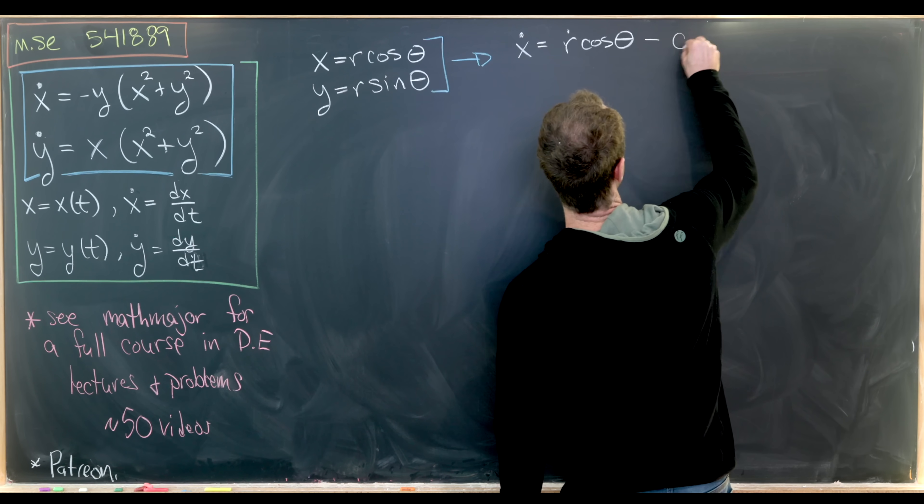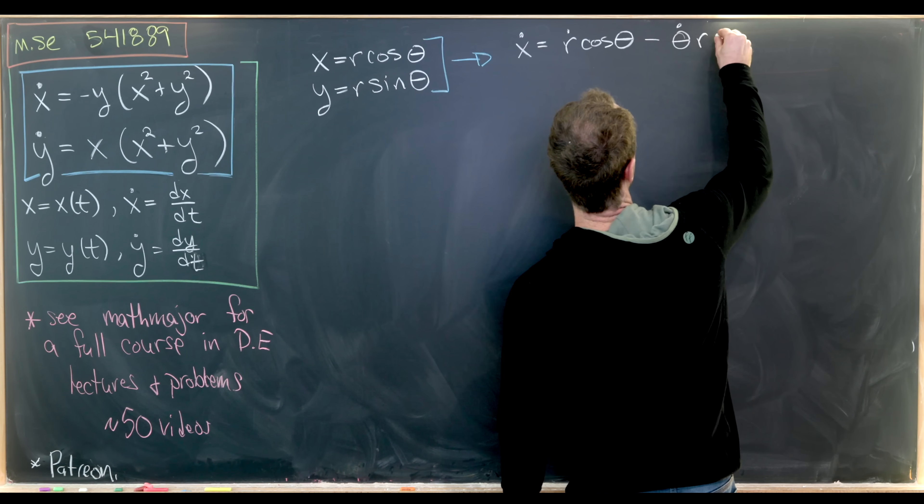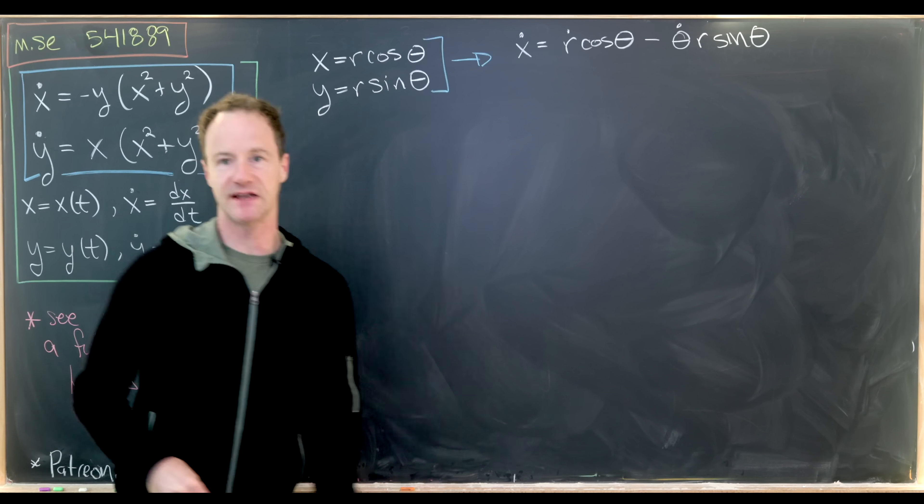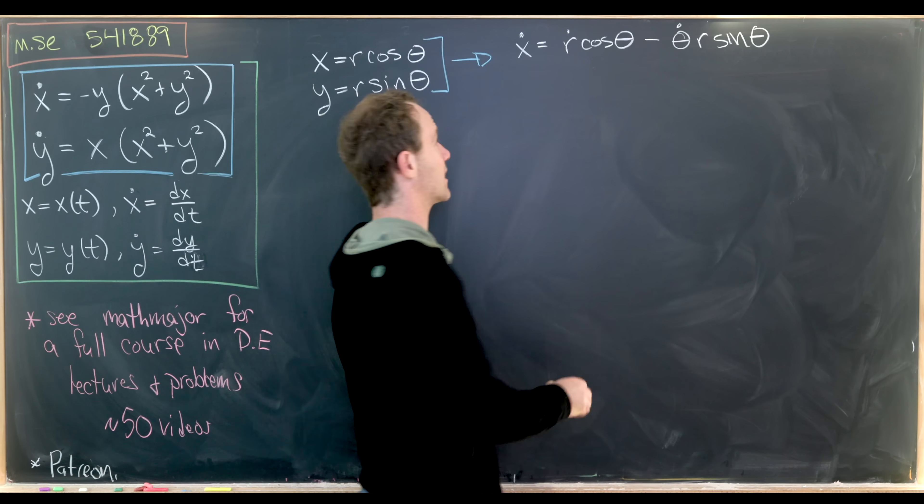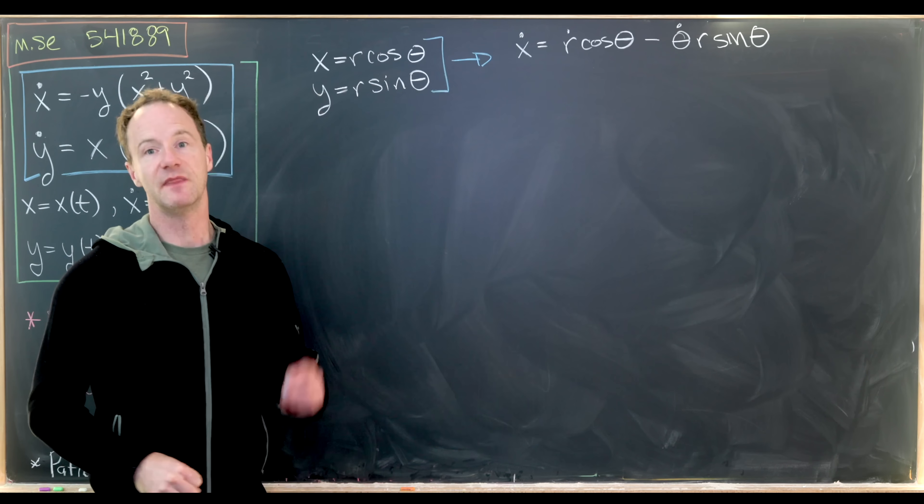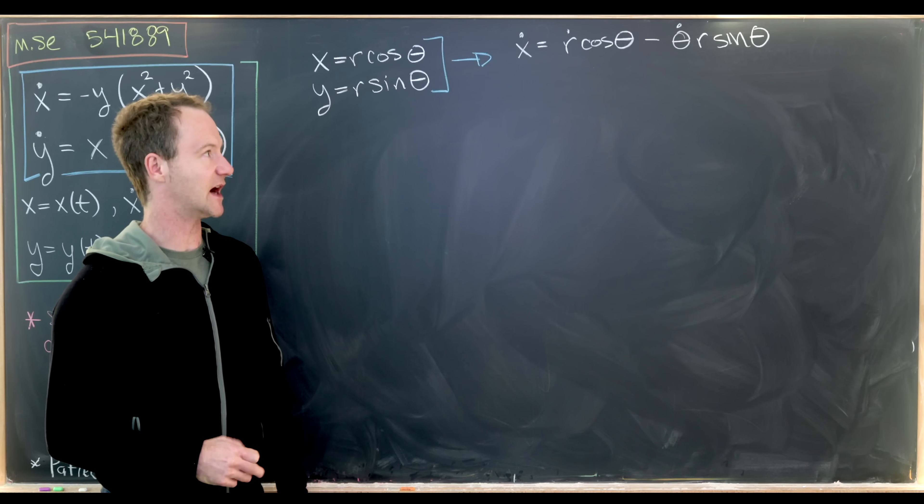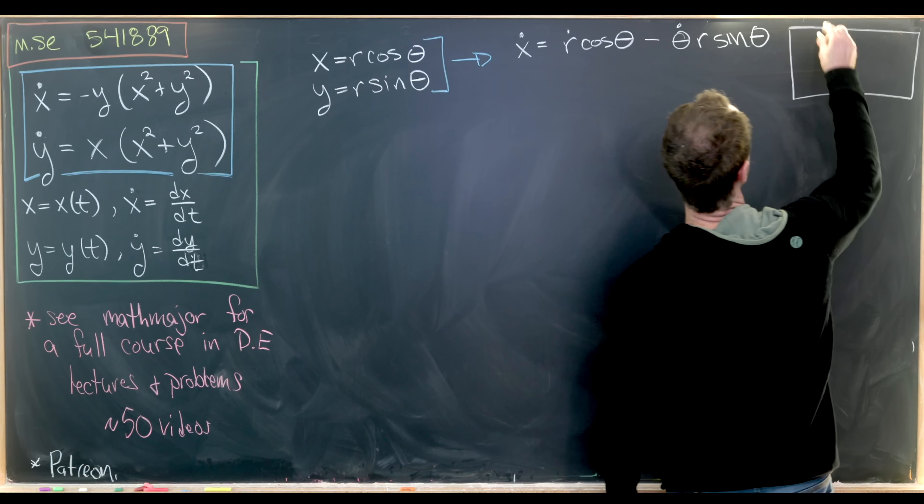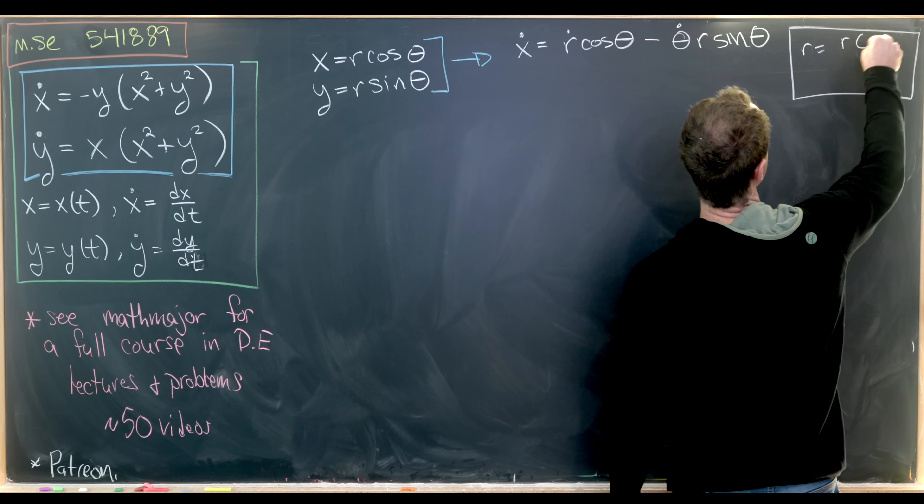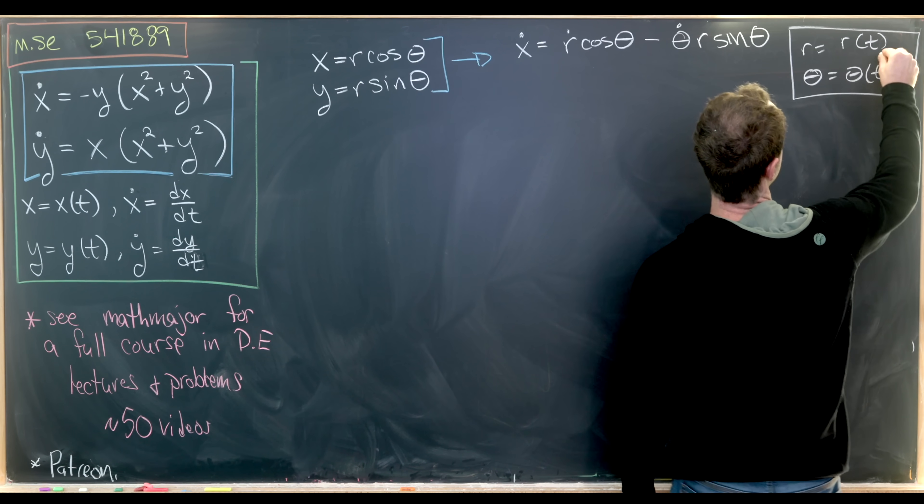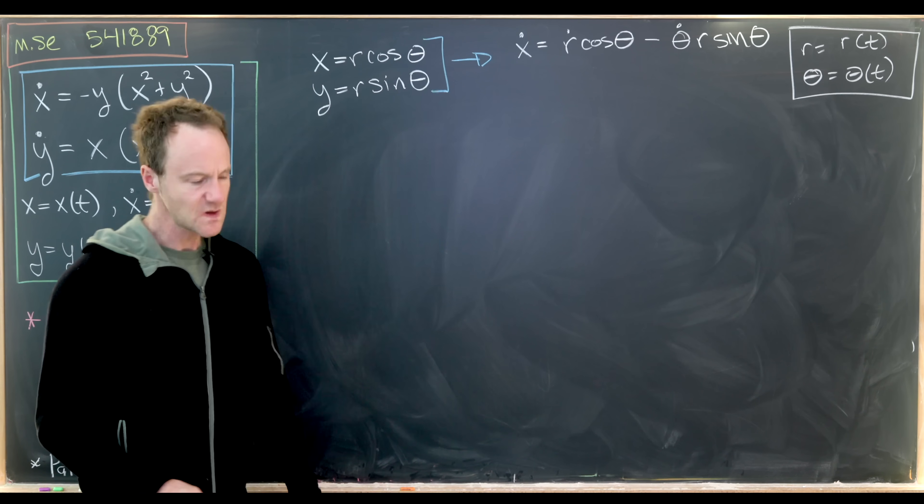and then we'll have minus θ dot times r times sine θ. So notice I had to use the chain rule there. I took the derivative of cosine and it became negative sine. Then I had to take the derivative of the inside function. Because with this setup, it's important to realize that r is a function of t and θ is also a function of t.